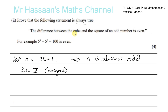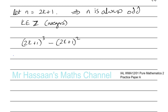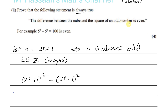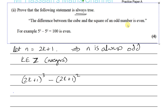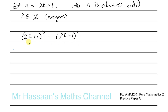If we find the difference between the cube and the square of that odd number, we get (2k+1) cubed minus (2k+1) squared. We have to prove that this expression is always going to be an even number when k is an integer. We could expand both brackets and simplify to show 2 is a factor, but there's a nicer approach using factorization.